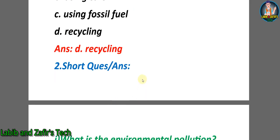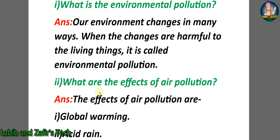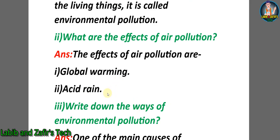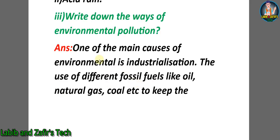Now let's go through short question answers. Number one: what is environmental pollution? Answer: our environment changes in many ways; when the changes are harmful to living things, it is called environmental pollution. Number two: what are the effects of air pollution? Answer: the effects of air pollution are global warming and acid rain. Third question: write down the ways of environmental pollution. Answer: one of the main causes of environmental pollution is industrialization.